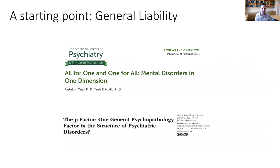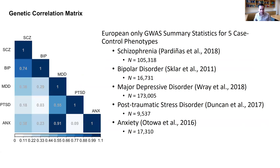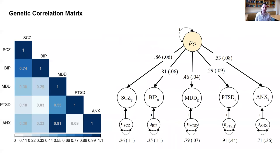We're working with five case-control phenotypes: schizophrenia, bipolar disorder, major depressive disorder, PTSD, and anxiety, which are moderately to strongly genetically correlated. We estimated a factor model specifying one common factor underlying the genetic covariation across these phenotypes, with unique factors representing residual variation specific to individual phenotypes. We then expanded the matrix to include SNP effects. For one example SNP, we can see it has negative associations with four of the five case-control phenotypes and a near-null association with PTSD — which has the lowest loading on the general factor.